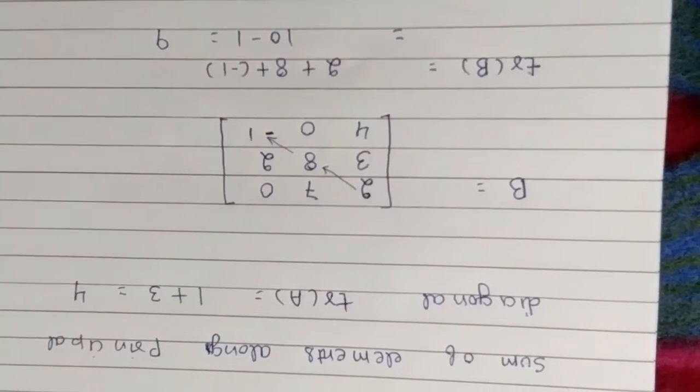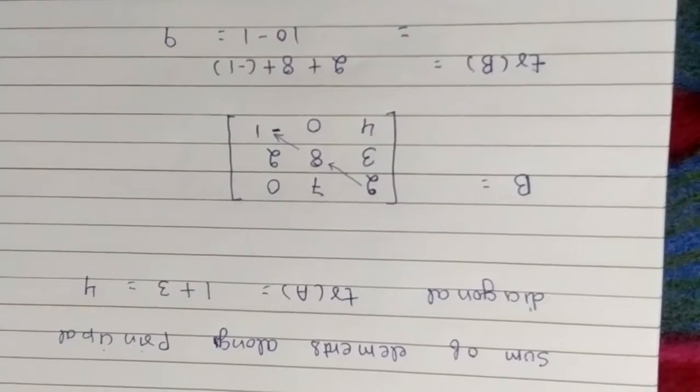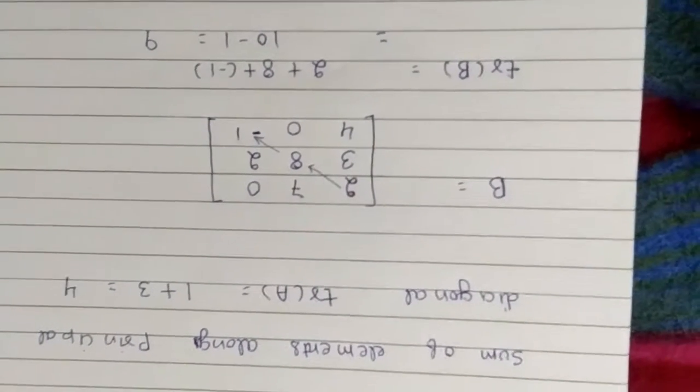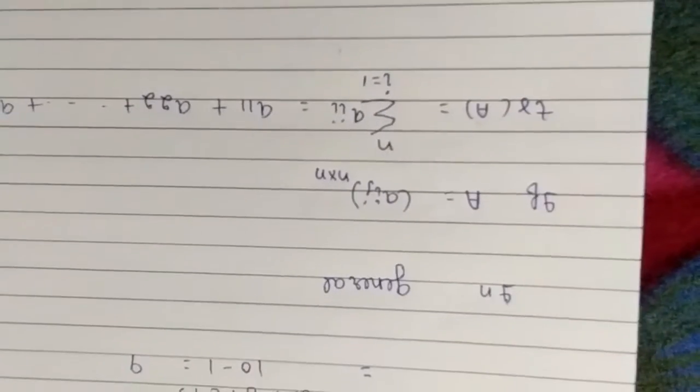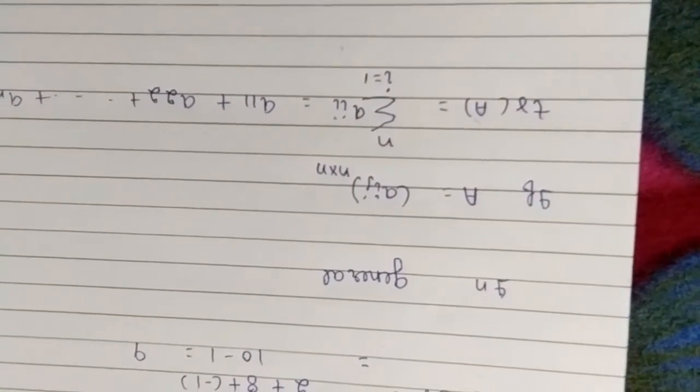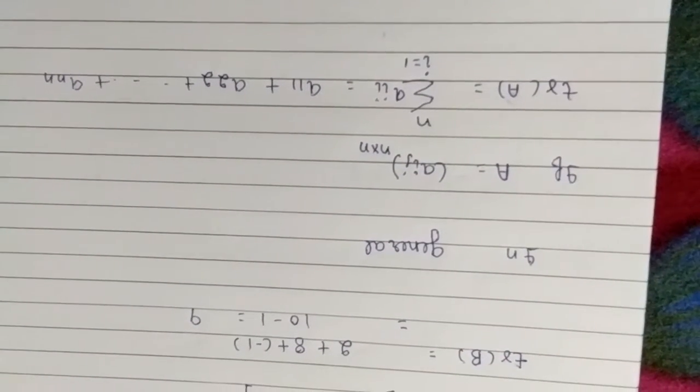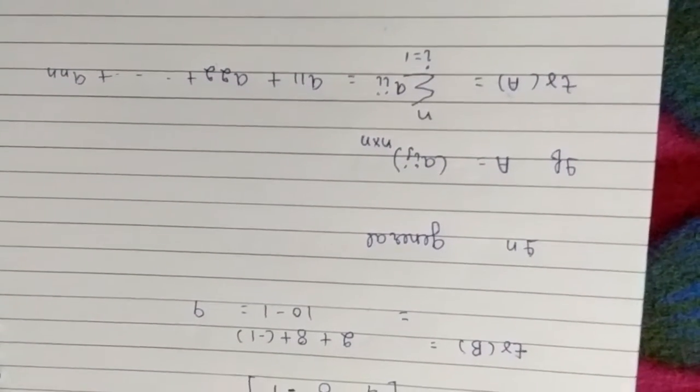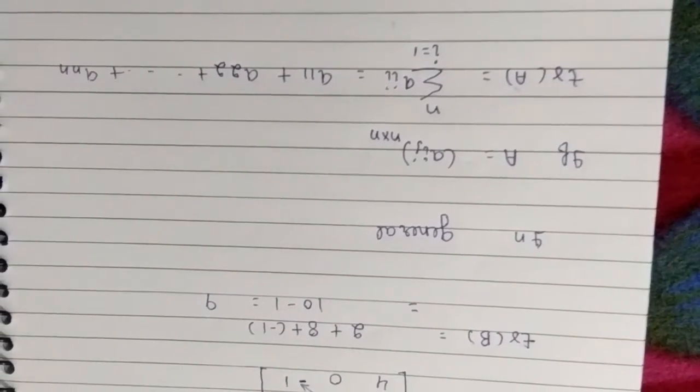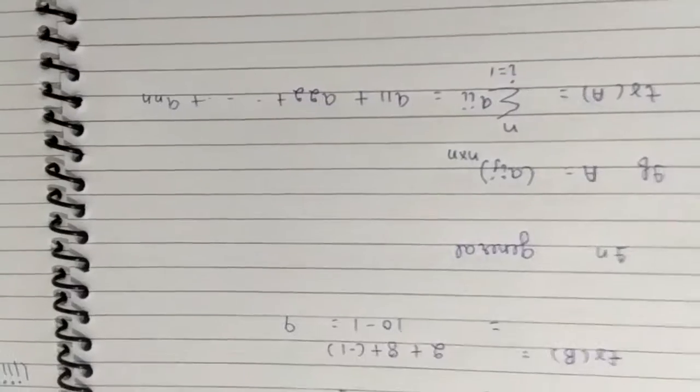So you have to just remember, you have to add the elements along the principal diagonal. So in general, if A is n cross n matrix, then trace of A will be summation i equals 1 to n of a_ii. Just you have to add the elements which are on principal diagonal and you will get the trace of A.